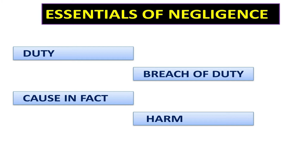Essentials of Negligence. Number one: Duty. The defendant owed a duty towards the plaintiff, i.e. reasonable care for other's safety. Number two: Breach of Duty. The defendant failed to act in a reasonable way or breached its duty. For example, a driver was reckless or intoxicated.